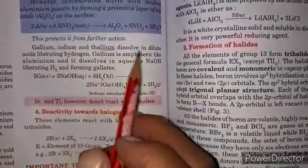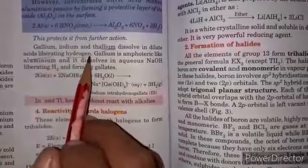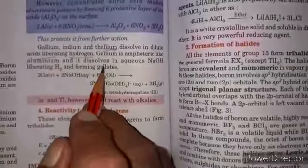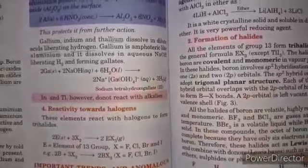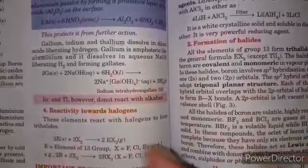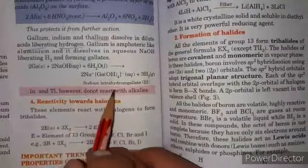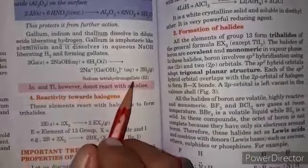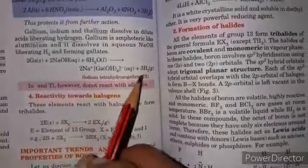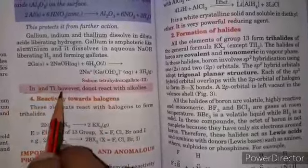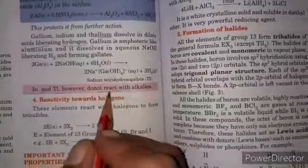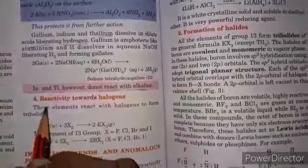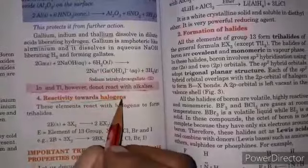Gallium, indium, and thallium dissolve in dilute acids liberating hydrogen gas. Gallium also acts as amphoteric in nature - it reacts with acid to produce hydrogen gas and also reacts with base to form a gallate, but indium and thallium do not react with alkaline base.